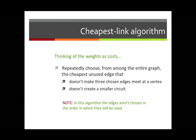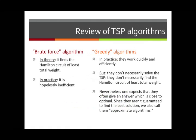To finish, let me review the traveling salesman problem algorithms we have learned. On the left, we had the brute force algorithm. In theory, that will find the Hamilton circuit of least total weight, but in practice it's hopelessly inefficient. The greedy algorithms work very well — they work quite quickly and efficiently. But here's the problem: they don't necessarily solve the problem. They don't necessarily find the Hamilton circuit of least total weight. Nevertheless, one expects they often give an answer which is quite good — pretty close to the least total weight. Since they aren't guaranteed to find the very best solution, we also call them approximate algorithms.